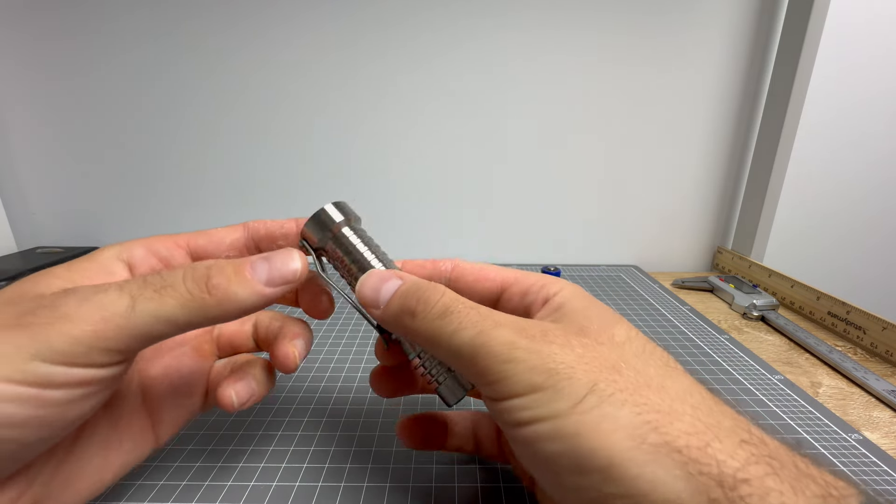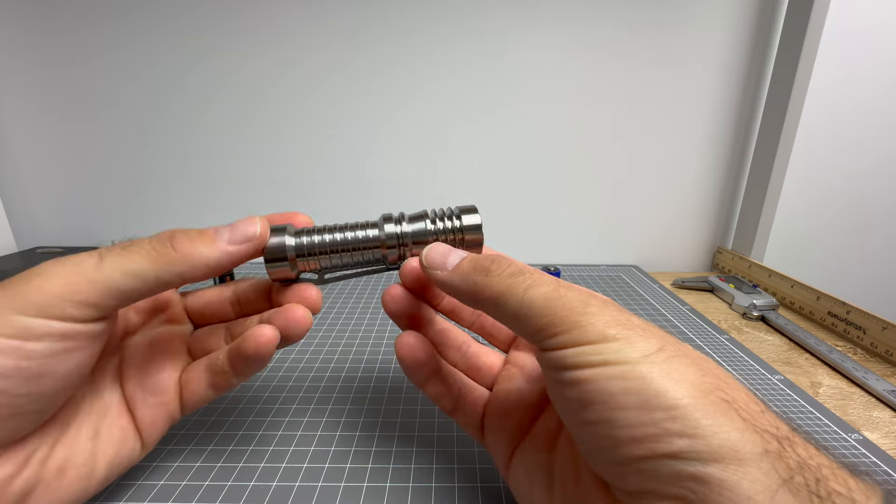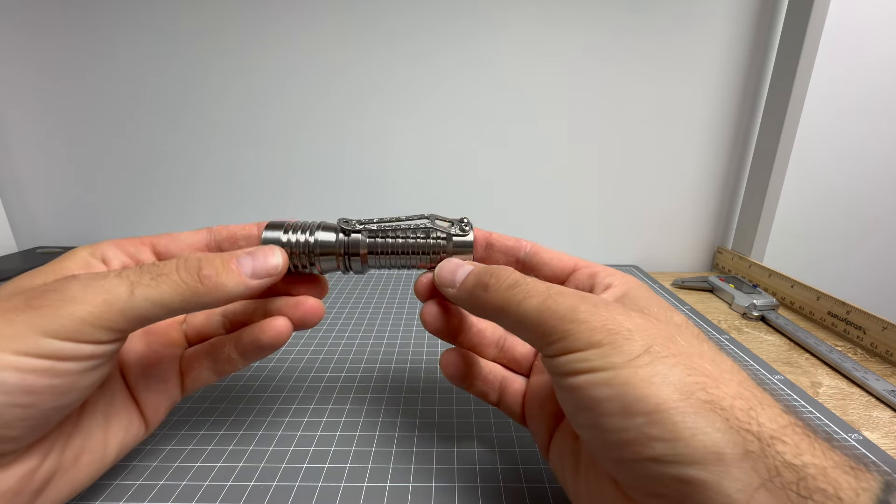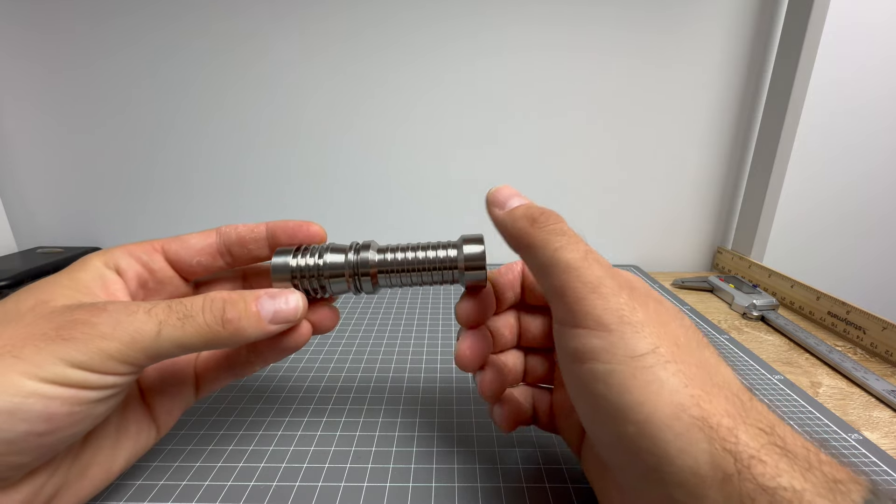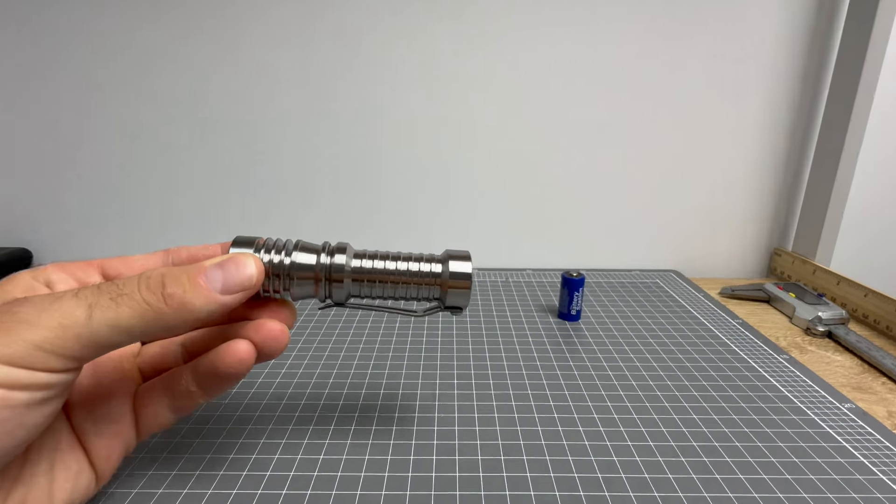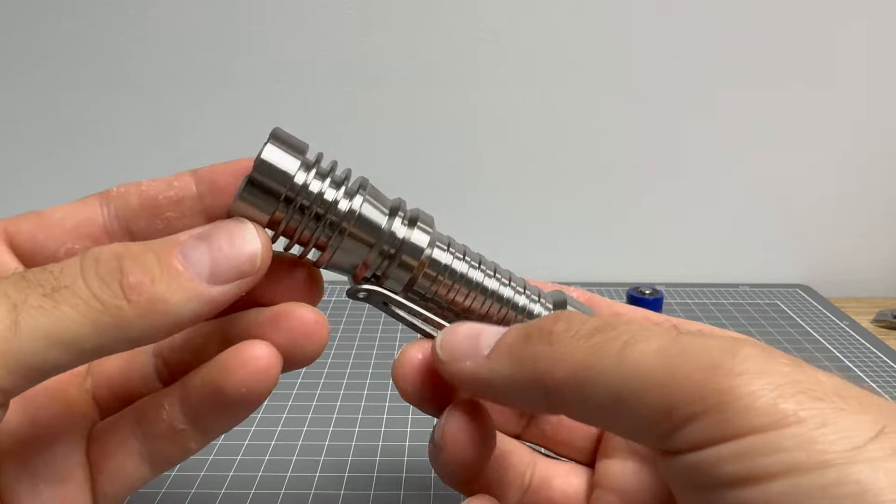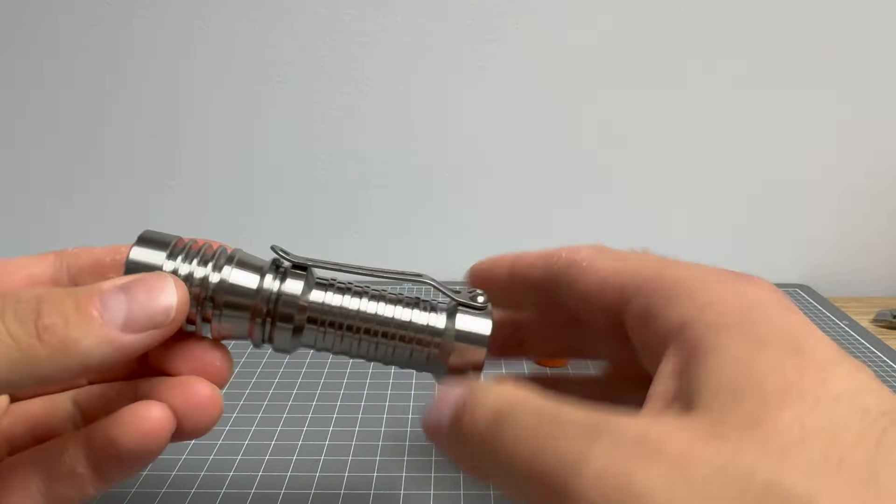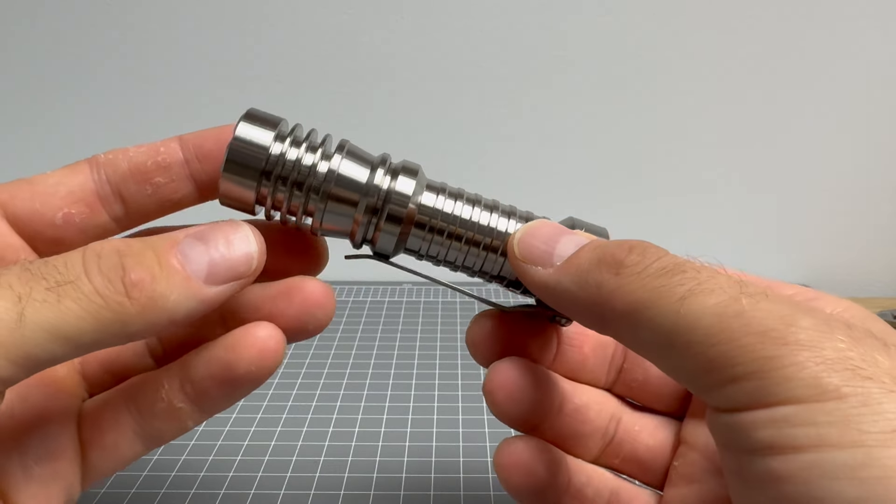Alrighty, here it is. The Haiku McGizmo. It's quite surreal to have one of these in my hand actually. So let's go ahead and zoom in to take a better look at this guy. There's no battery in it at the moment. I will go over the battery options, but right now let's just look at it.